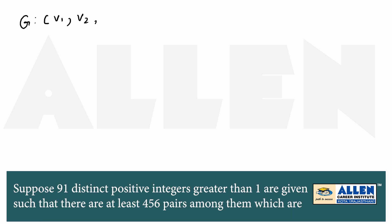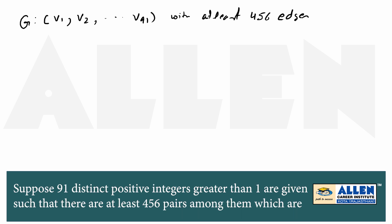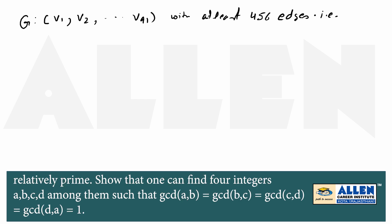So that is V1, V2, dot dot dot V91 with at least 456 edges, that is E greater than or equal to 456.